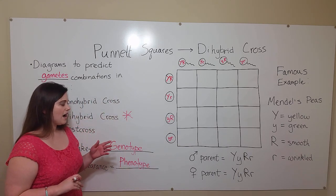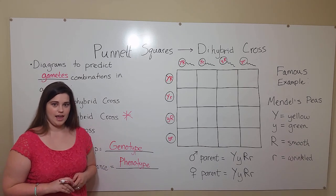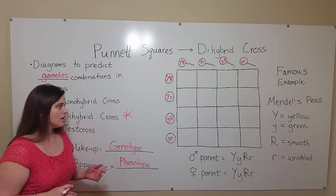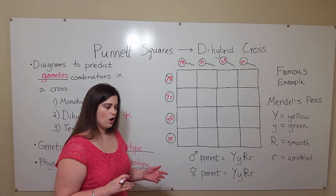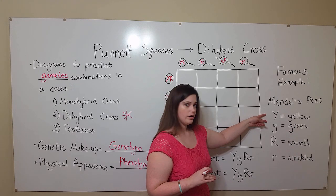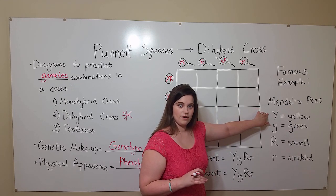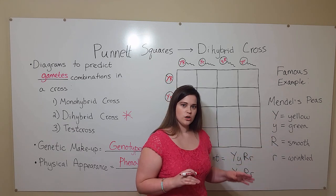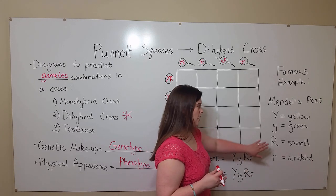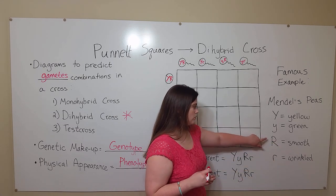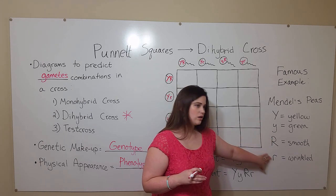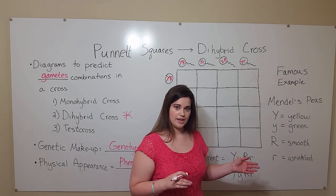To talk about dihybrid crosses, we're going to be using a famous example, and that is Mendel's peas. With Mendel's peas, there are two different alleles for seed color: yellow and green. Yellow is dominant, hence the use of the capital letter. There are also two different alleles for seed appearance or texture or shape — these are smooth and wrinkled. Smooth is dominant, hence the use of the capital letter. Green and wrinkled are recessive, which is why we use lowercase letters.